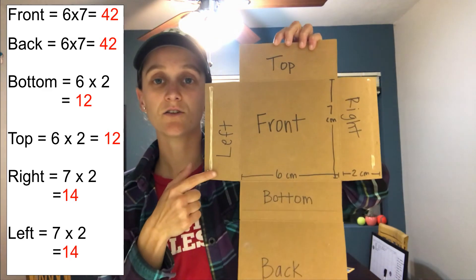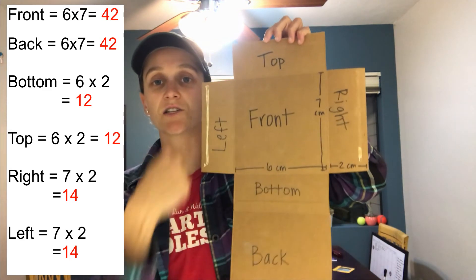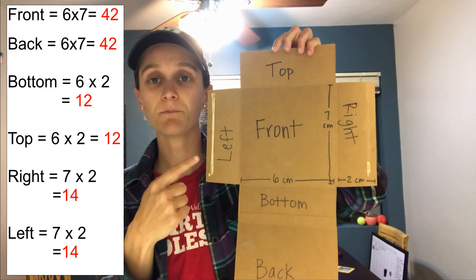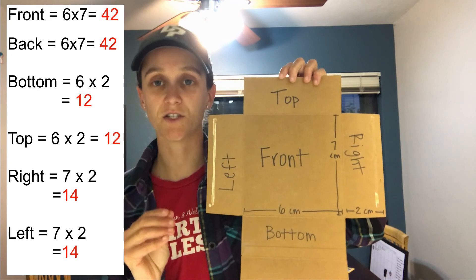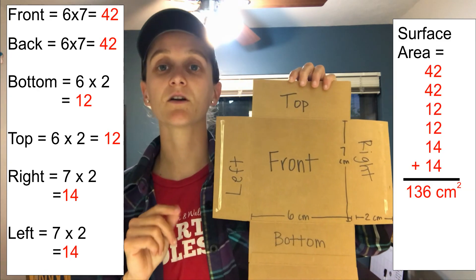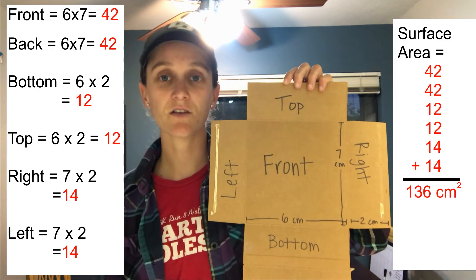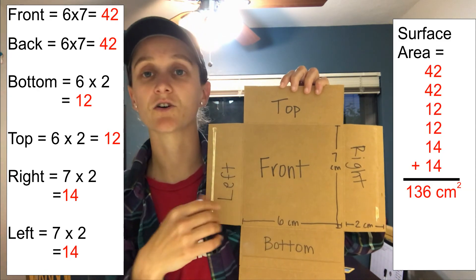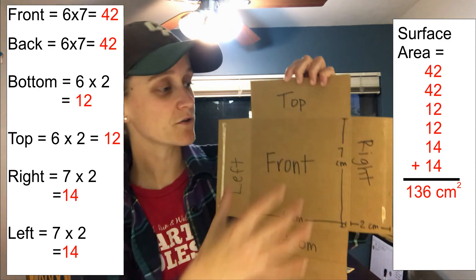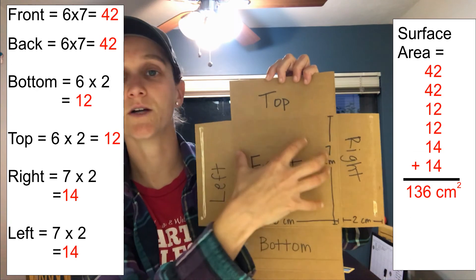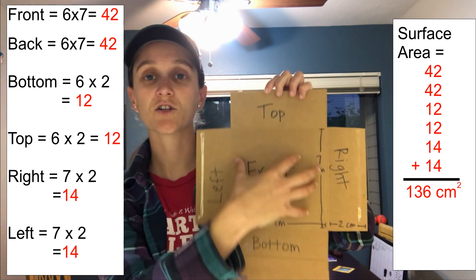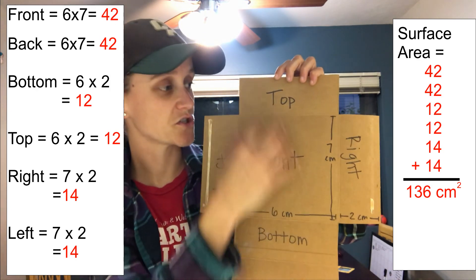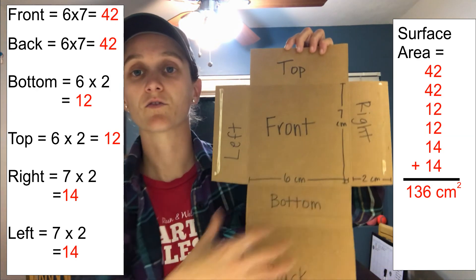So the area of the front is 42, the back is 42, the top is 12, the bottom is 12, the right is 14, and the left is 14. I need to add those six numbers together, and that gives me my total surface area. Surface area is the area of all the sides — if you can find the area of one shape, you can find surface area, because you're just doing it for all the different sides.